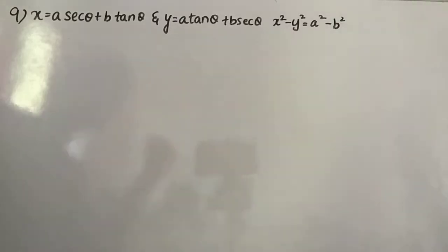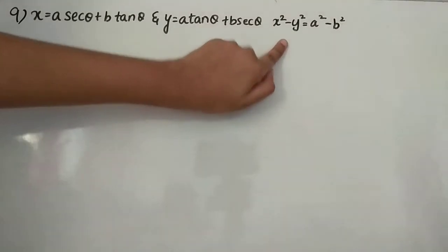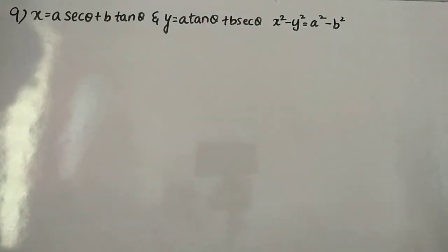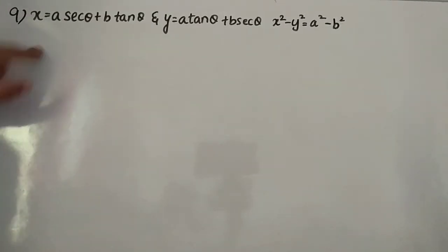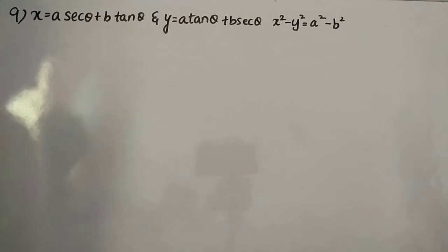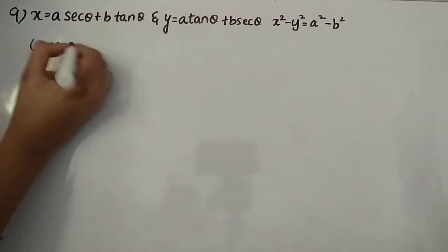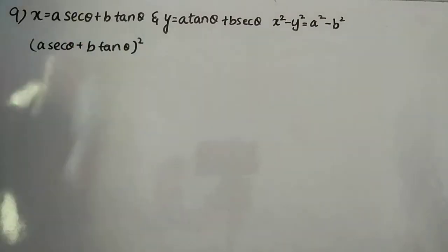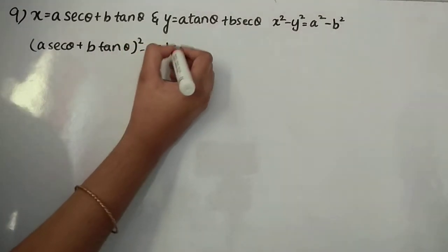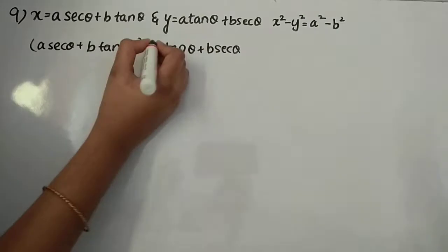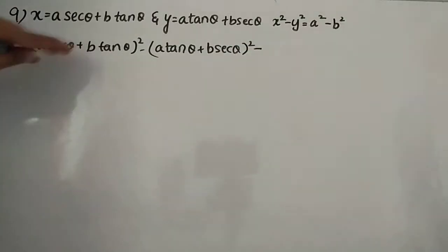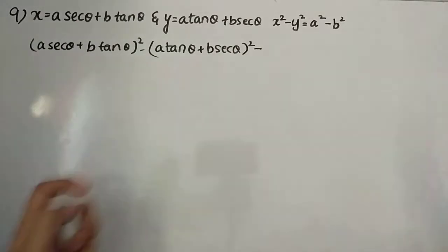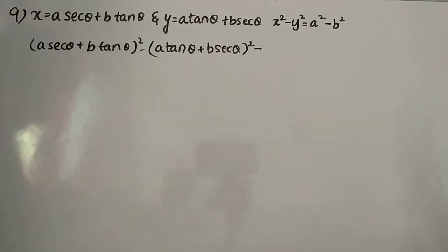Now the 9th question. The given data: x and y values are given, and we have to prove that x² − y² = a² − b². So first, we take x² − y² and square the expressions: (a·sec θ + b·tan θ)² minus (a·tan θ + b·sec θ)². Now expanding: a²·sec²θ + b²·tan²θ + 2ab·sec θ·tan θ, and similarly we write the other bracket.